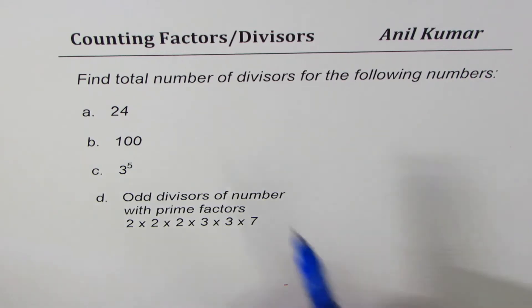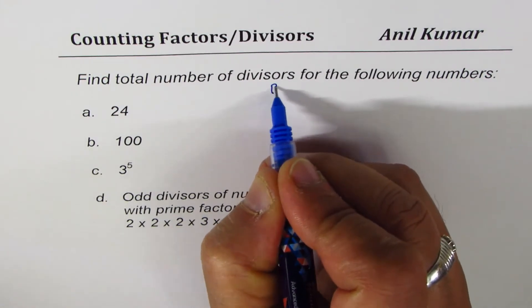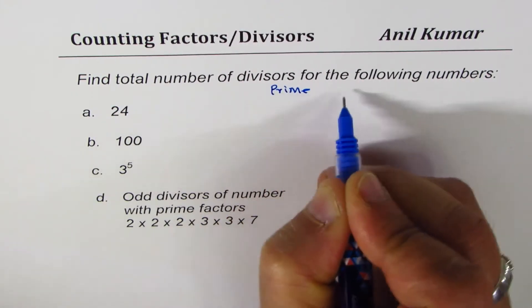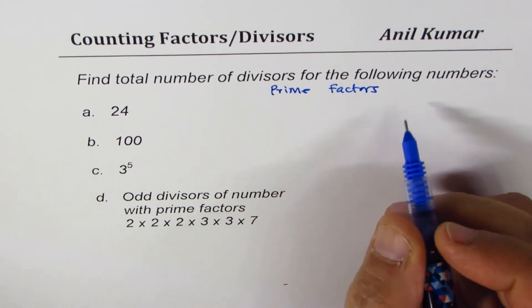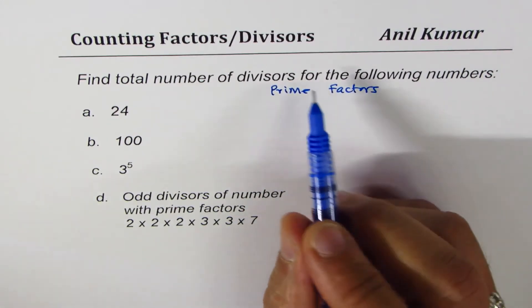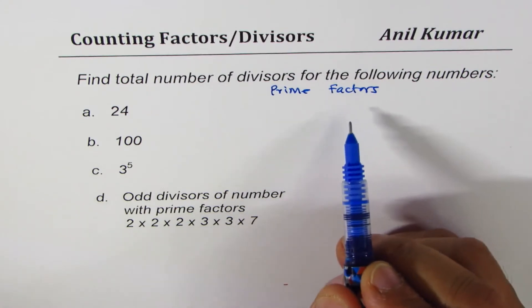Now to find the number of divisors or factors we will use the method of finding prime factors first, and once we know all the prime factors then from there we have a formula to use, so I'll elaborate on the method.